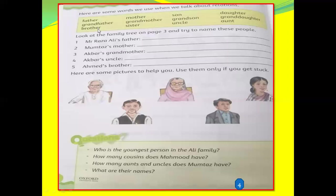Brother: if you have a brother, he is the son of your mother — he will be your brother. Now sister: sister means daughter of your parents. You can say she is my sister. Uncle: he is the brother of your father or the brother of your mother — you can say uncle. Aunt: she is the wife of your uncle — you can say she is my aunt.